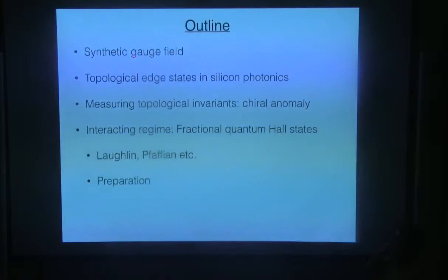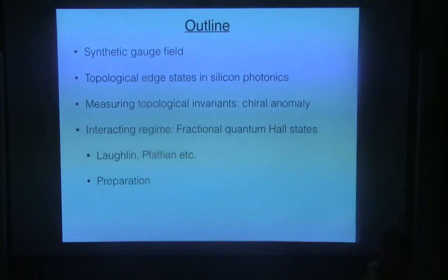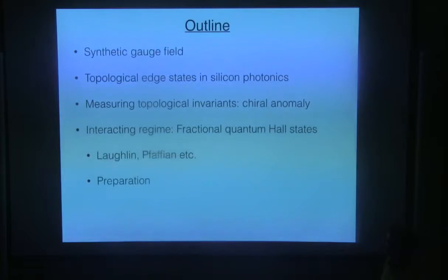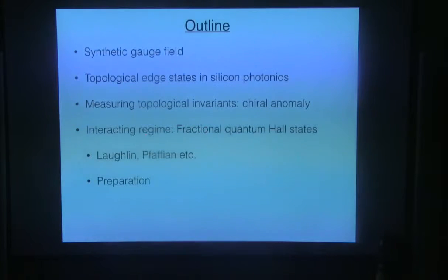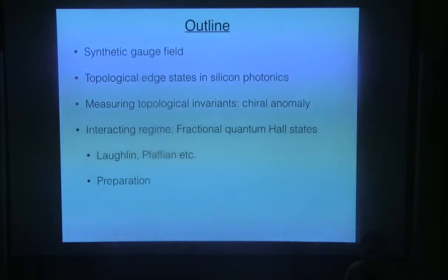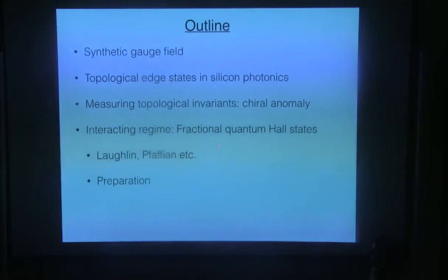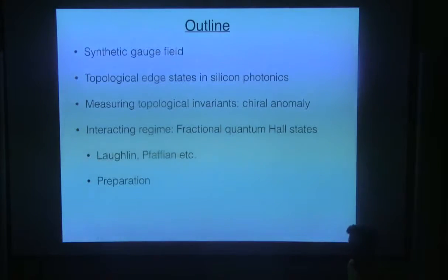The outline of the talk is the following: I will tell you how we can synthesize gauge fields to make the hallmark example of topological states, which is basically quantum Hall physics. I will tell you how we can image these topological states in silicon photonics. And then the main part will be how we can measure the topological invariance related to those states in photonic systems. This three-part section is completely non-interacting physics. Then we go to strongly interacting physics — what kind of interesting physics we expect when we add strong interaction. I think this is the right audience of visible and telecom photons and also the circuit QED community, where we can think about how we can manage to implement strong photon-photon interaction to achieve many-body physics.